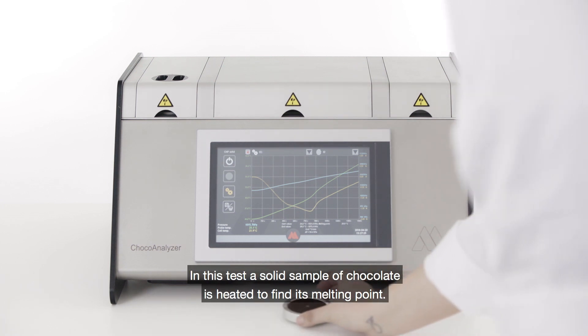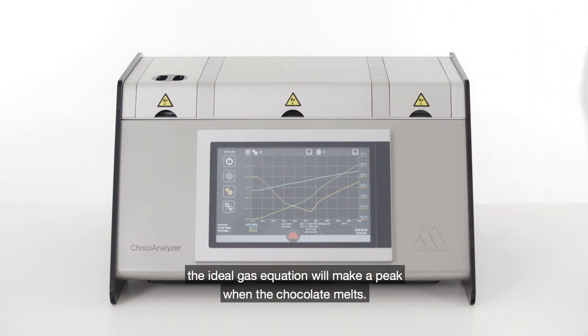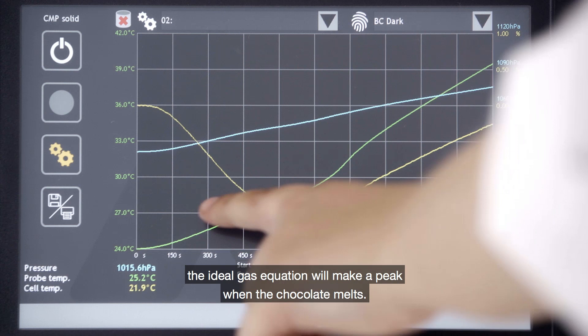In this test, a solid sample of chocolate is heated to find its melting point. By measuring the temperature and pressure change, the ideal gas equation will make a peak when the chocolate melts.